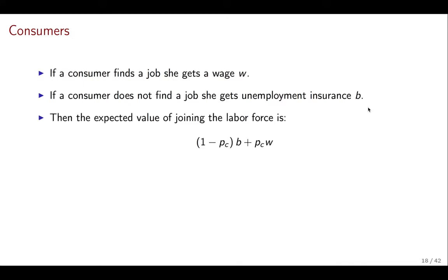The expected value of joining the labor force is the following: with probability 1-PC, the consumer does not get a job and so the income is given by B; with probability PC, the consumer gets a job and the income is given by W.